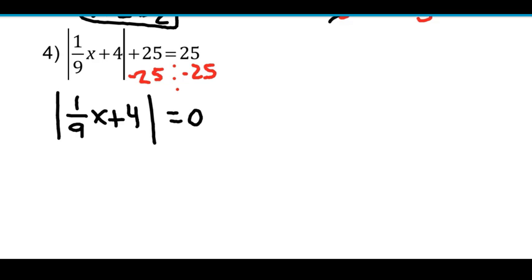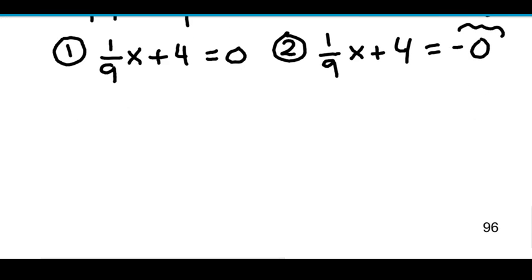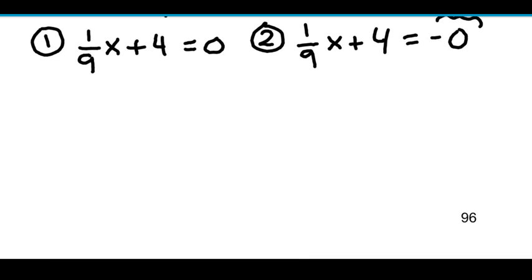On this one, you do technically have two cases still. But if you think about it, you don't really have to write out both. When you write out case 1, and you just take the bars off, the quantity inside the absolute value equals 0. When you write out case 2, you would get the exact same thing, because when you put the minus sign on, look what happens. I have case 2, I take the bars off, and I put a minus sign. Well, negative 0 is just 0. So you don't even need to do this. You can save yourself some work and just work on case 1. Anytime your absolute value quantity equals 0, you only have to do one side.